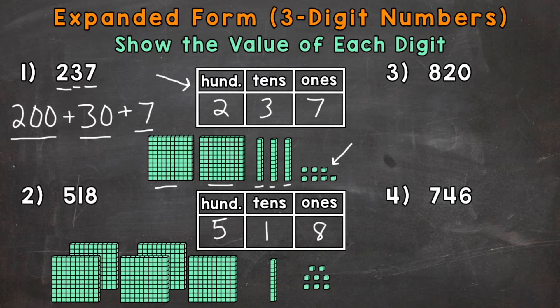So that 5 has a value of 500. It represents five groups of 100, which again is 500. So we have 500 plus the value of the 1. That 1 represents one group of 10, which has a value of 10. Plus the 8, which represents eight ones, which has a value of 8.